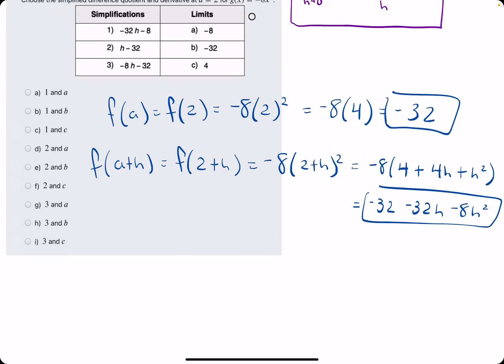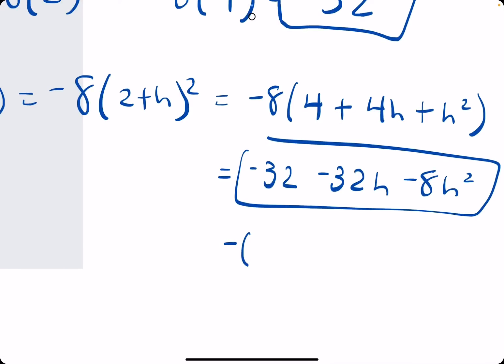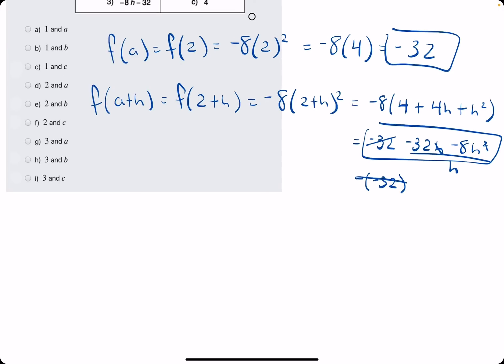So we have our f of a plus h, our f of a. When we subtract the f of a, the 32s will cancel. We're left with this divided by h. So the h is canceled. And we're just left with negative 32 minus 8h.